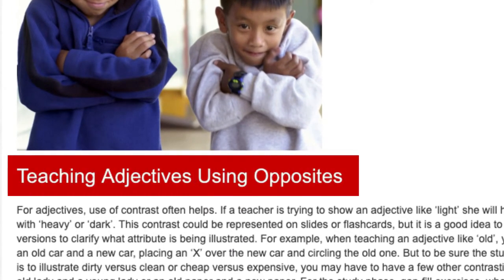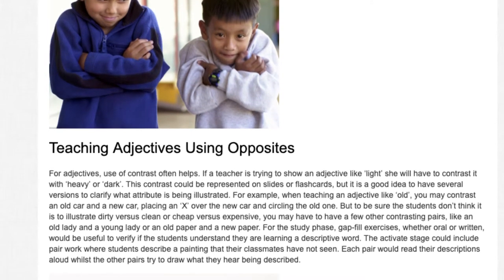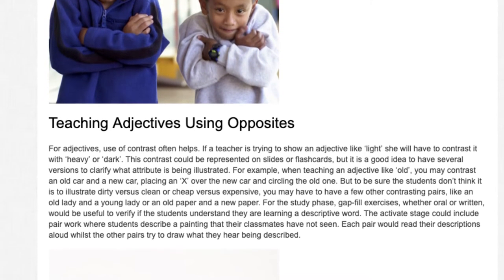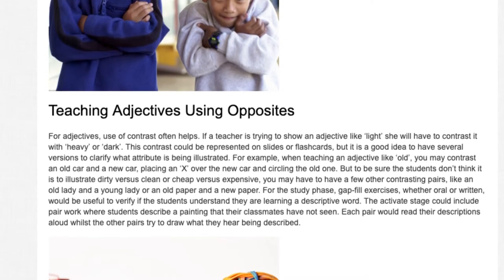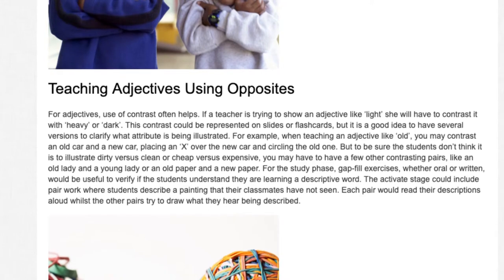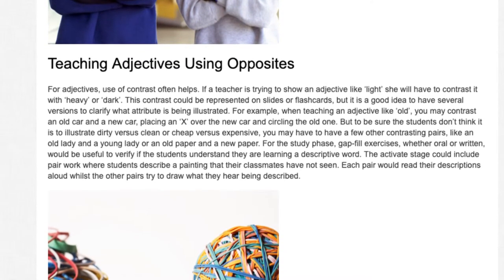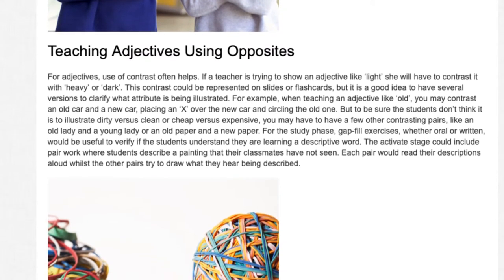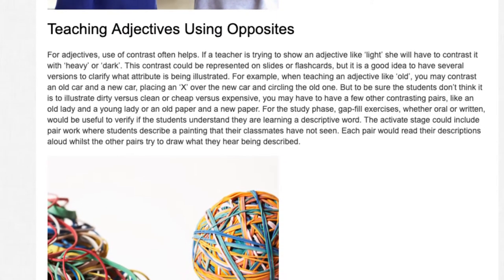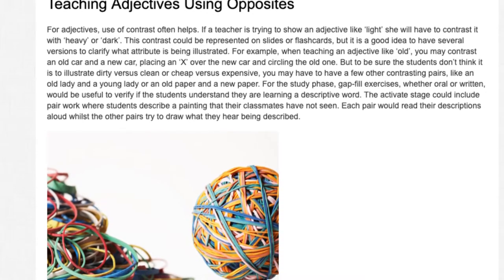For adjectives, use of contrast often helps. If a teacher is trying to show an adjective like 'light,' she will have to contrast it with 'heavy' or 'dark.' This contrast could be represented on slides or flashcards, but it is a good idea to have several versions to clarify what attribute is being illustrated. For example, when teaching 'old,' you may contrast an old car and a new car, but also include an old lady versus a young lady, or old paper versus new paper. For the study phase, gap-fill exercises — oral or written — would be useful.